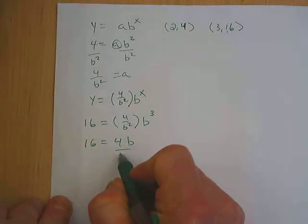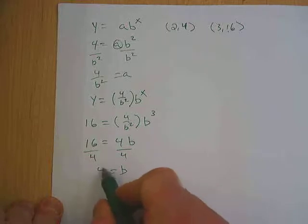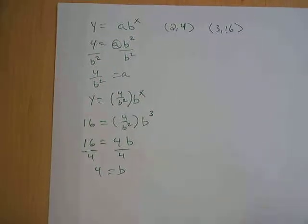So I get 16 equals 4b, divide each side by 4, and I get b equals 4.